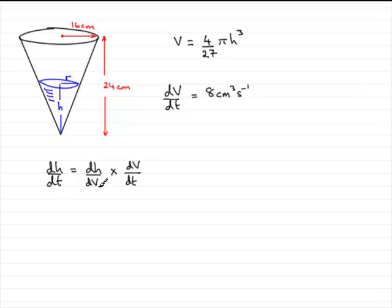But from the first part of the question, we established that the volume was (4/27)πh³. And so we can find from this dV/dh.